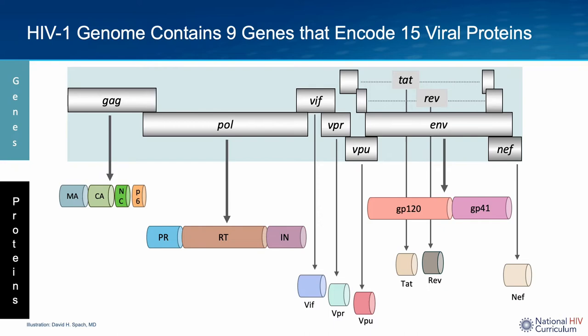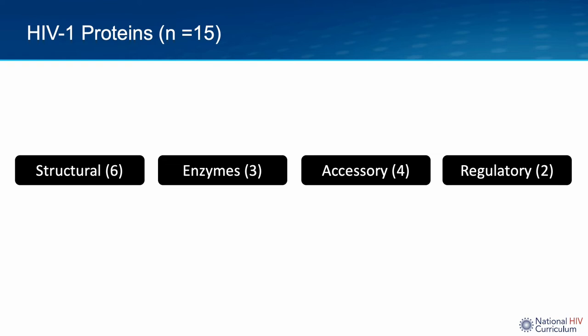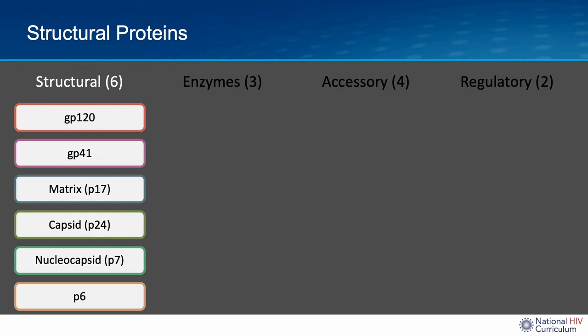I'm going to focus on the HIV proteins. To better understand the role of each of the 15 HIV proteins that are produced, it's useful to group them into four main categories: structural, enzymes, accessory, and regulatory. There are six structural proteins: GP120 and GP41, which together make up the HIV envelope protein, matrix, capsid, nucleocapsid, and P6.